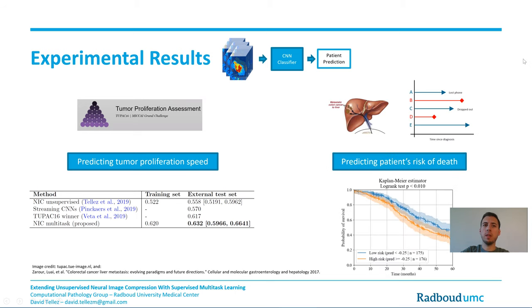Second, we train the system on liver images learning directly from overall survival, and we were able to divide the patient population into two risk categories.